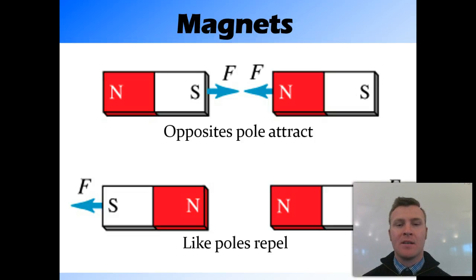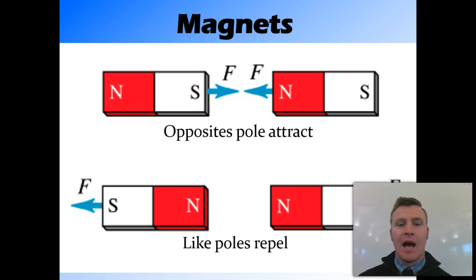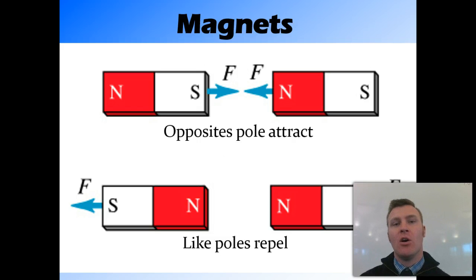Common through all magnets is that opposite poles attract. So if you have a south pole and a north pole and you bring them together, they'll be attracted to each other. And like poles repel — so if you have two north poles, they'll repel and be pushed away from each other. Two south poles will also repel each other.